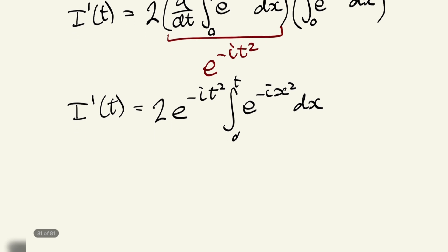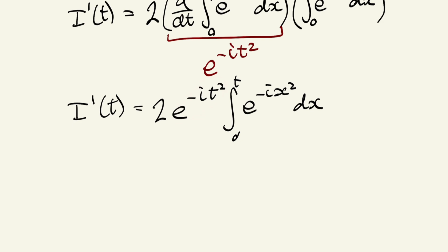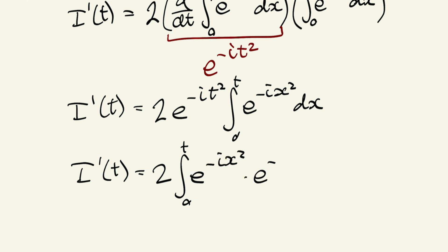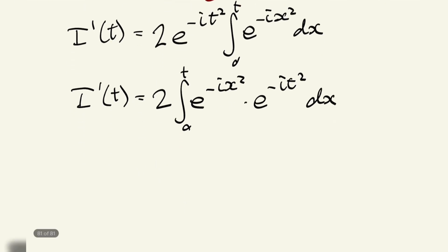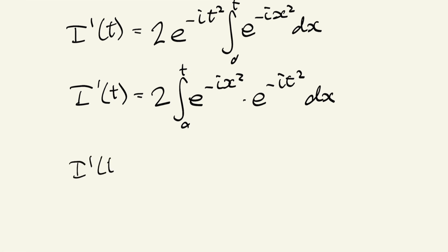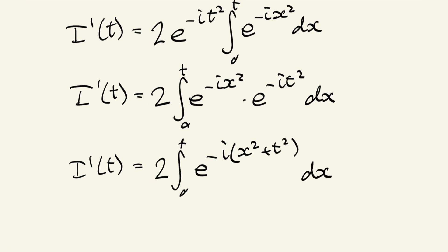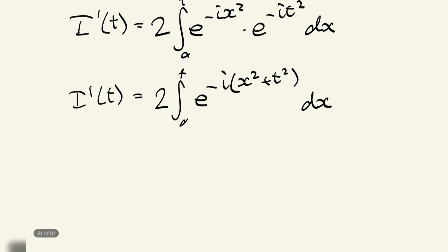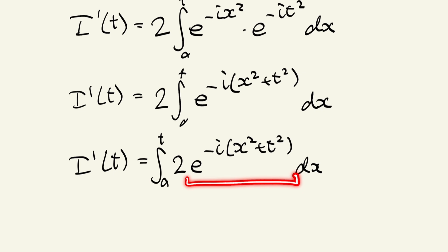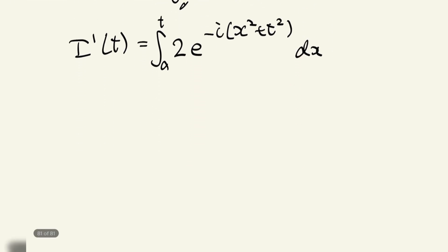In the x world, e to the negative i t squared is just a constant, so we can bring it inside the integral. So I'(t) equals 2 times the integral from zero to t of e to the negative i x squared times e to the negative i t squared dx. Adding the powers together, I'(t) equals 2 times the integral from zero to t of e to the negative i times (x squared plus t squared) dx. We then bring the 2 inside the integral as well.